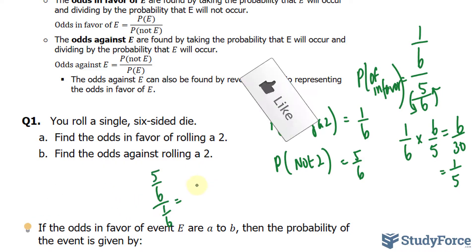That's the same thing as saying 30 over 6. So the odds of winning are 5 to 1. So that's 5 to 1, and this is 1 to 5.